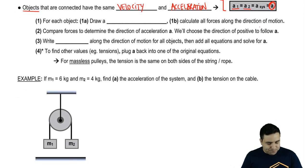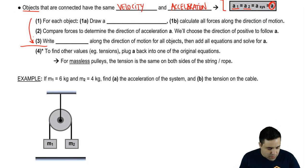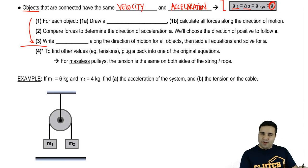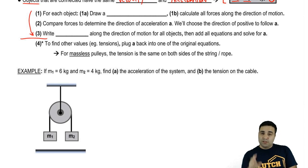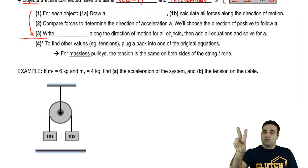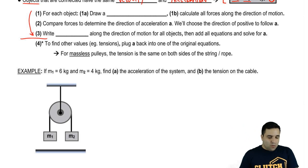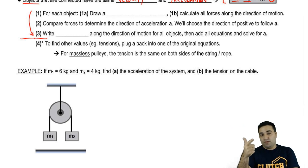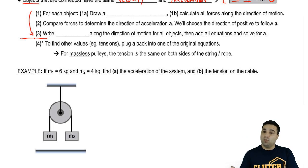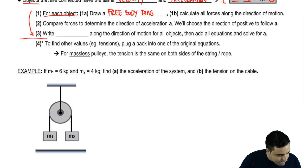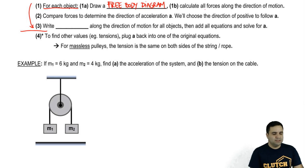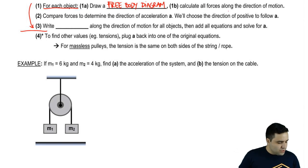There are four steps to do this. The first three are the main ones, and the fourth depends on what additional information you're asked for. Basically, what you're doing is just a few things: you're writing F equals MA, drawing a free-body diagram, and then putting it all together. That's how we always solve force problems — free-body diagram, F equals MA. But here, if you have two objects, you just do that twice and put it together. For each object, we're going to draw a free-body diagram and calculate all the forces along the direction of motion.